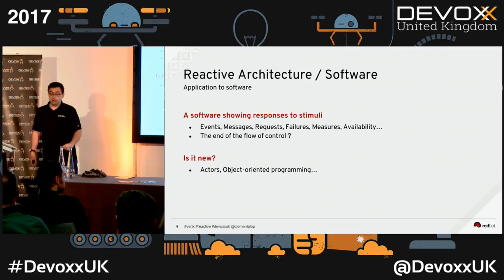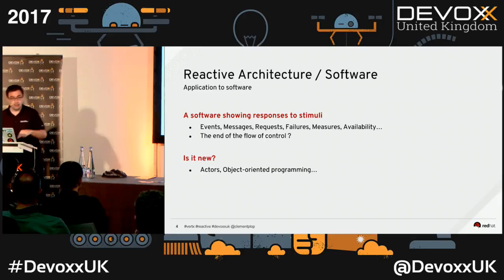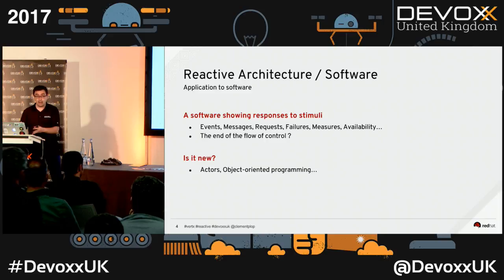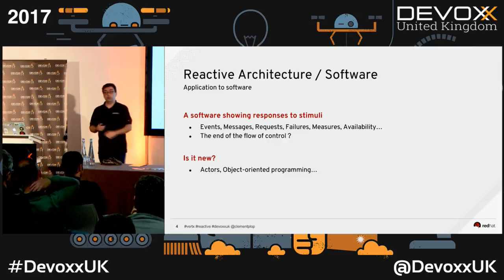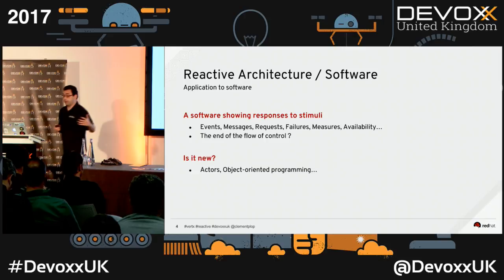There is one type of stimuli I didn't mention yet — something we don't think about anymore: a keystroke. I push a button and I expect to have an A on my screen. Something somewhere reacts to this event and prints it on my screen. According to this definition, this is also reactive. So is it new? No. Reactive comes from the 70s, probably even before.